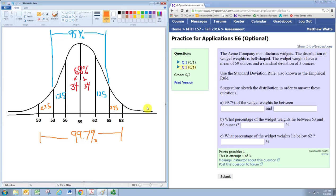So the first question is, 99.7% of the widgets lie between what and what? 99.7% are going to be within three standard deviations of the mean. So we would use the 50 and the 68.